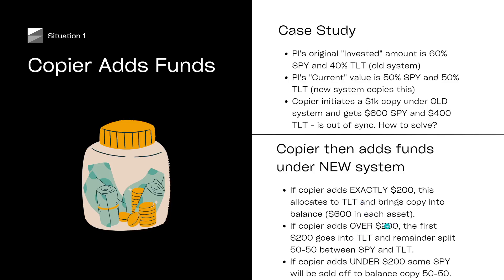If you add over $200, that's where it gets a bit more complicated. It would put the first $200 into TLT, which would give you $600 of each, and the remaining money would split 50-50. So if you added $400 for example, it would put $300 in TLT and $100 in SPY, which would give you $700 of each. So it's always going to keep you level, same as the PI.